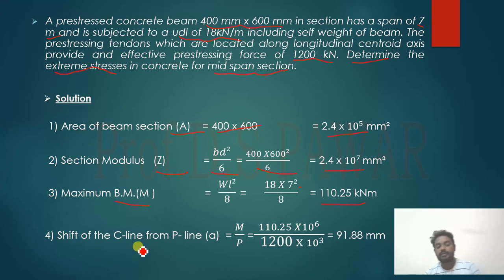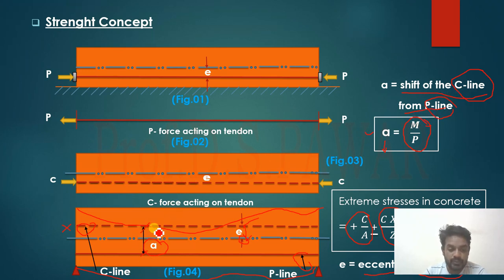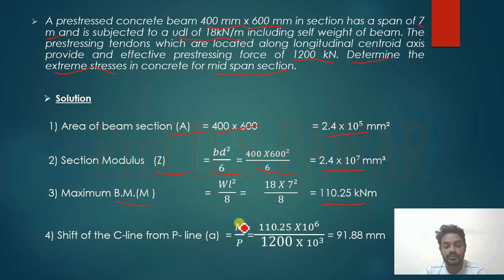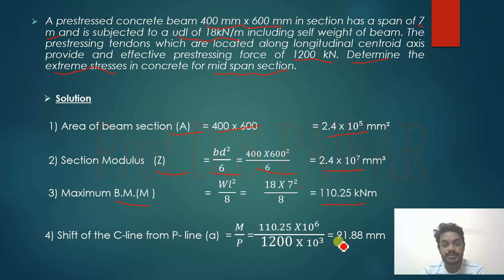Now calculate the shift of C-line from P-line. Using the formula a = M/P: a = 110.25 × 10⁶ N·mm / (1200 × 10³ N) = 91.875 mm. So the distance between the P-line and the C-line is 91.875 mm.